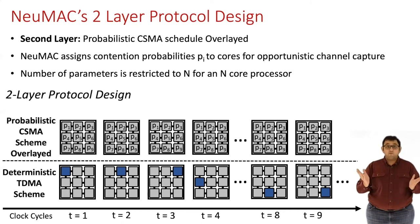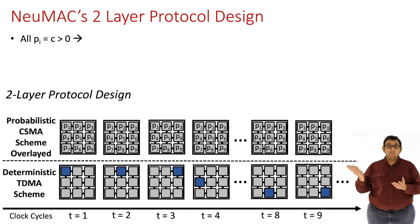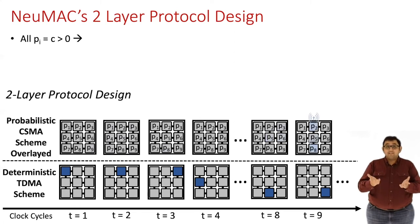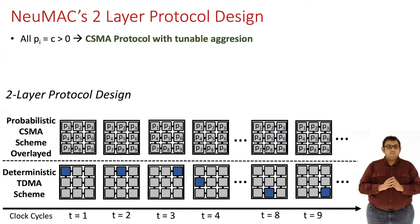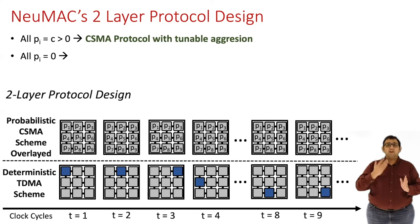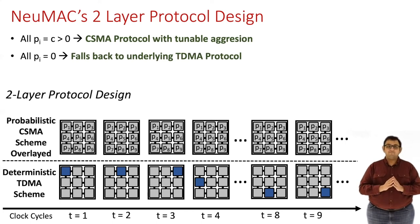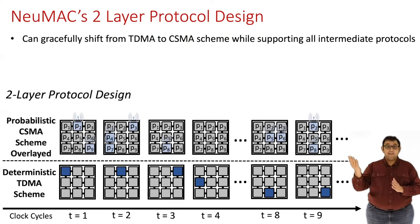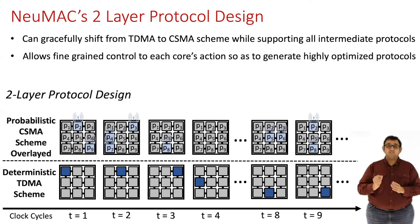This alone gives our protocol a lot of flexibility. For instance, consider if we set all P_i to some value C greater than 0. Then in each time slot, core i will try to steal the channel with probability C, and this emulates a CSMA-like protocol where we can tune the level of aggression by changing C. On the other hand, if all P_i are set to 0, none of the cores will try to transmit in other slots, and this simply falls back to the underlying TDMA schedule. So this design allows newMAC to emulate TDMA, CSMA, and all shades in between. Additionally, since newMAC can control each core's actions individually, it can generate very fine-grained and highly optimized protocols.